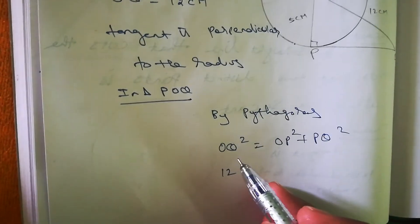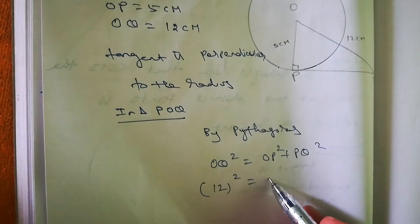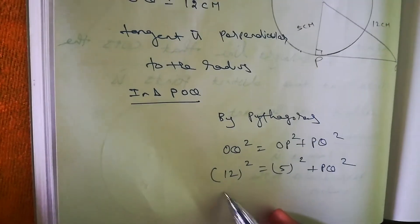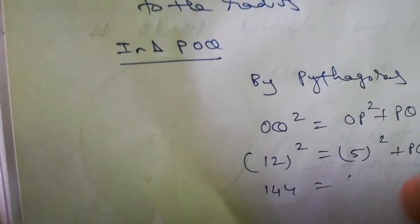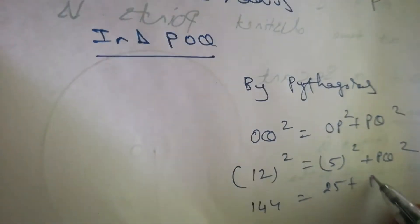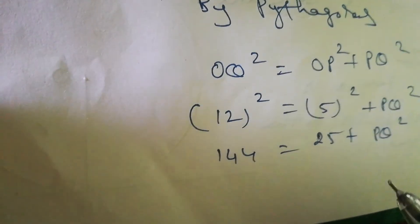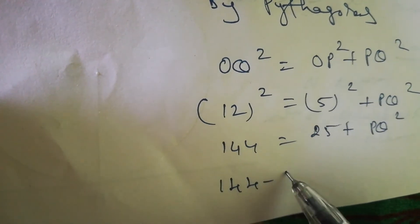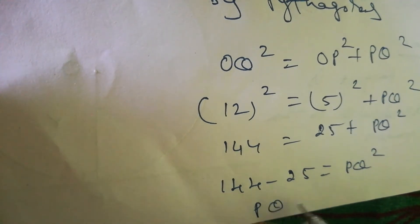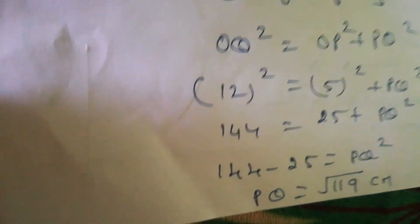OQ is 12, so 12² = 5² + PQ². That gives us 144 = 25 + PQ². Rearranging: PQ² = 144 − 25 = 119. Therefore, PQ = √119 cm.